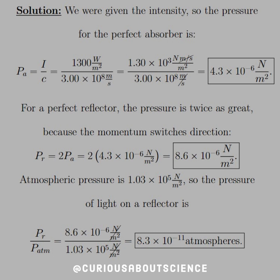And the atmospheric pressure is 1.03 times 10 to the 5 newtons per meter squared. So the pressure of the light on a reflector is P_R over P atmosphere. Take the ratio. And we see here that we have 8.3 times 10 to the negative 11 atmospheres. So not that much.